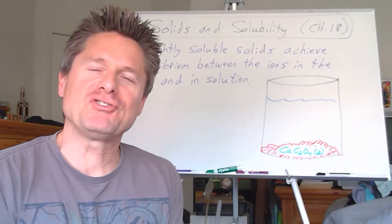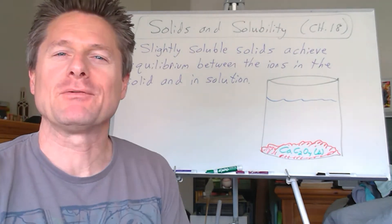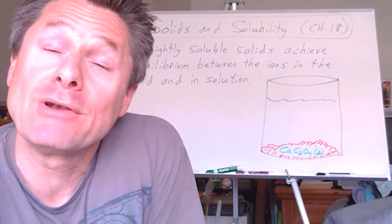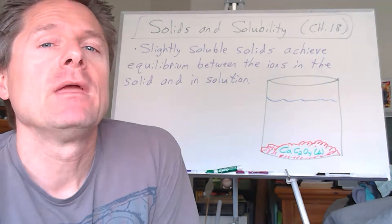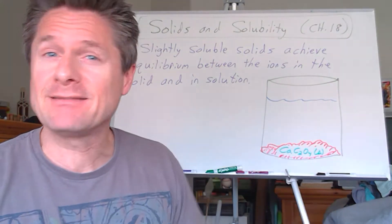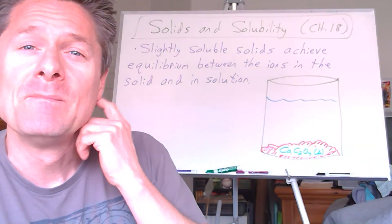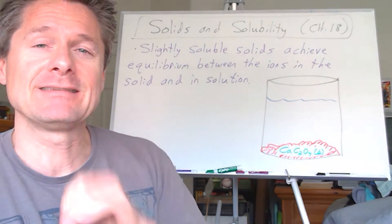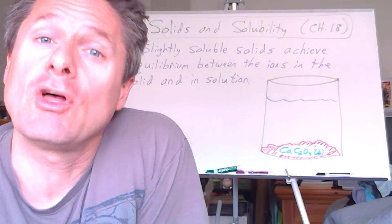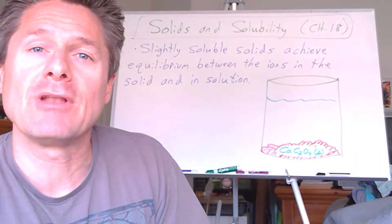Hey, chemistry team, it's Chemistry Coach with a brand new chapter and topic. This is video number one — for our class, chapter 18. It falls under the big umbrella of equilibrium; we've looked at weak acids, weak bases, water auto-ionization, and complex ions. Now we're going to add solids — specifically slightly soluble solids. This does not apply to soluble solids like sodium chloride; they dissolve 100% and you treat them like strong electrolytes.